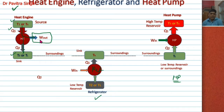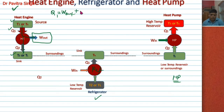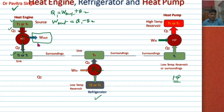This device is used to produce work by the combustion of fuel. Now we will calculate the heat balance. Heat Q1 is supplied and this is converted into work output and rejected heat Q2. So we can write Q1 is equivalent to W_output plus Q2, hence W_output equals Q1 minus Q2. This device offers us high-grade energy partly by the combustion of fuel.